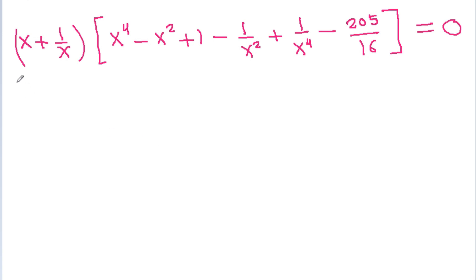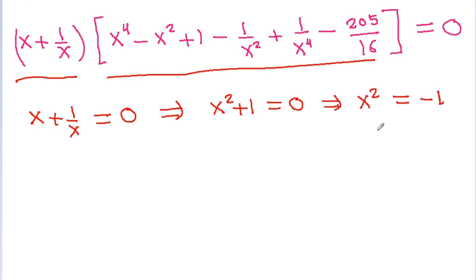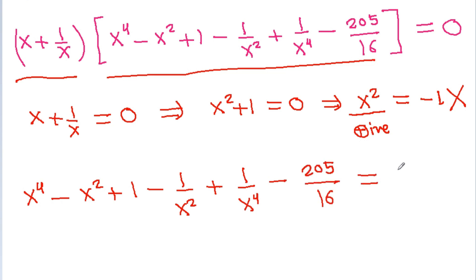We have the product of two equations equal to 0, meaning either x plus 1 by x equals 0, which gives x squared plus 1 equals 0, so x squared equals minus 1. Since x squared is always positive, this cannot equal minus 1. So the second case is: x power 4 minus x squared plus 1 minus 1 by x squared plus 1 by x power 4 minus 205 by 16 equals 0.